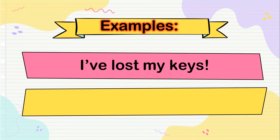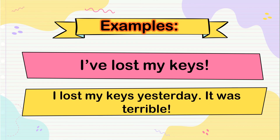Also we have: 'I've lost my keys.' That's a finished action with a result in the present — the result is that I can't get into my house now. But if you say 'I lost my keys yesterday, it was terrible,' that is a finished action with no result in the present — now there is no result, I got new keys.